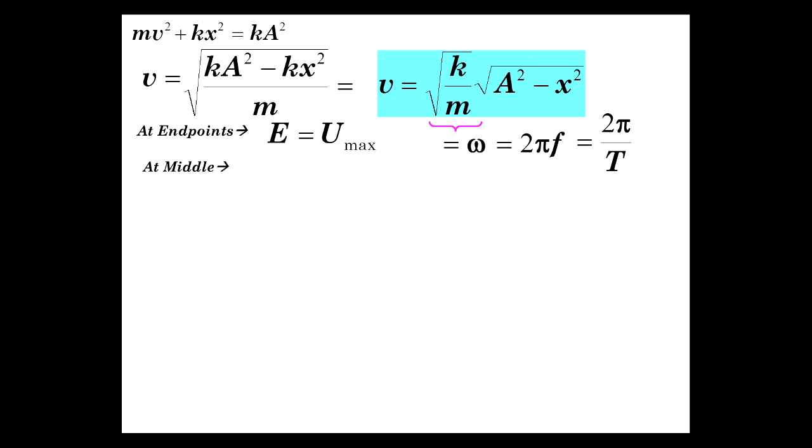In the middle, that's where x is zero. If x is zero, then we have basically omega times square root of A squared, which is A, which is also the radius of the circle from whence this came, but omega A. So it is all in the form of kinetic energy, and we have the maximum kinetic energy at that point.